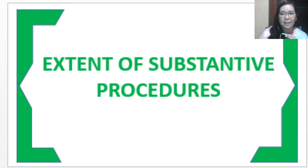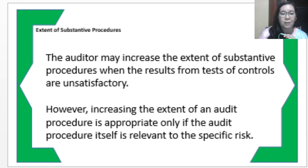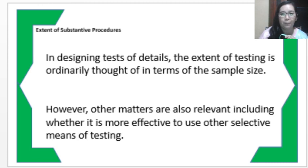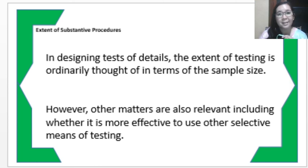Regarding the extent of substantive procedures, the auditor may increase the extent when results from the test of controls are unsatisfactory or when internal controls are ineffective. However, increasing the extent of procedures is appropriate only if the audit procedure itself is relevant — this is an important consideration. In designing the test of details, the extent of testing is ordinarily thought of in terms of sample size, where the sample represents the whole. It may also be more effective to use other selective means of testing aside from substantive procedures.